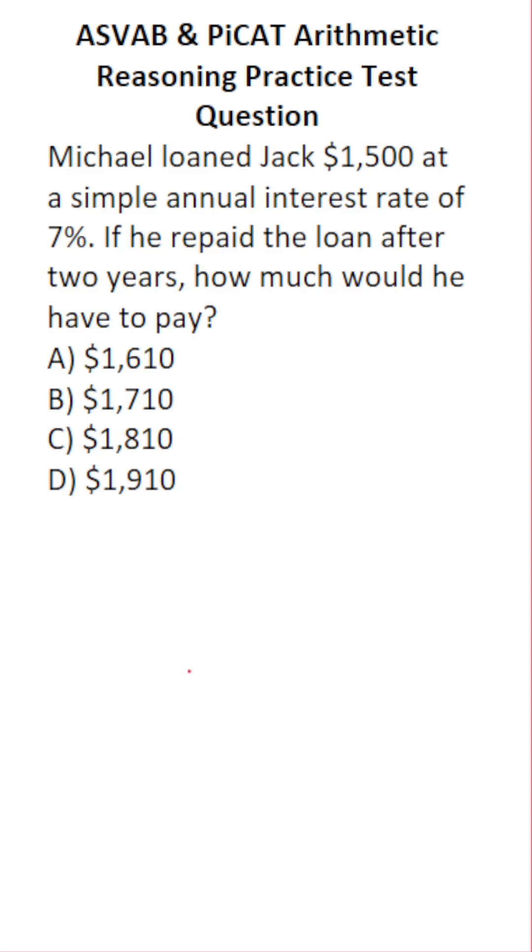This arithmetic reasoning practice test question for the ASVAB and PICAT says, Michael loaned Jack $1,500 at a simple annual interest rate of 7%. If he repaid the loan after two years, how much would he have to pay? So this is testing your knowledge of simple interest.